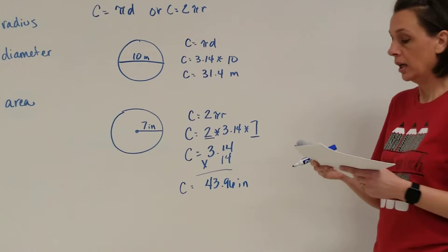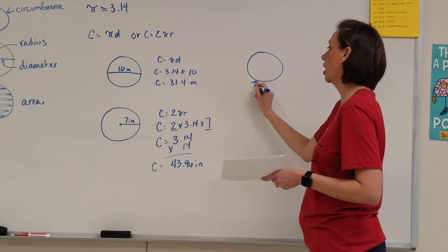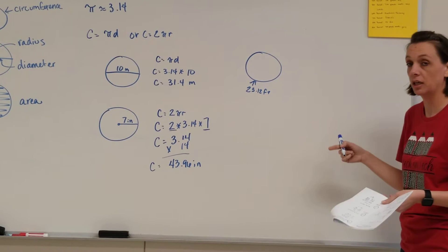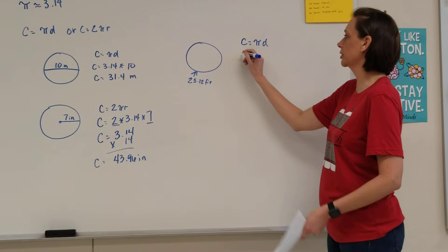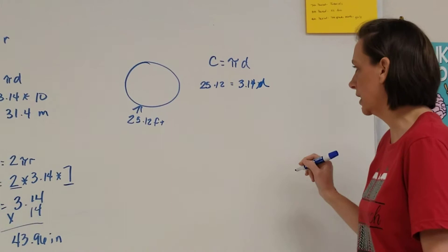Sometimes it's going to say, if I'm given the circumference, I want you to find the diameter. So if I have a circle and it says I have a circumference, all the way around is 25.12 feet. How do I find the diameter? If circumference is pi times diameter, and I know my circumference this time is going to be over here.